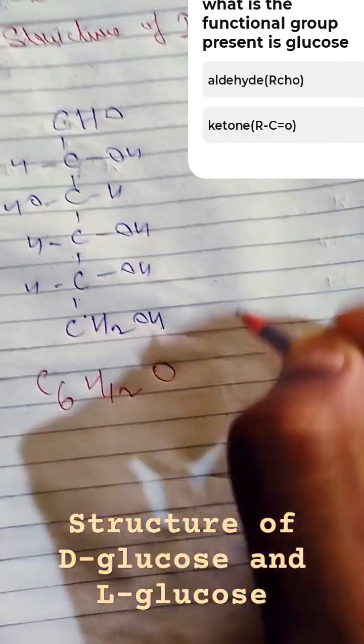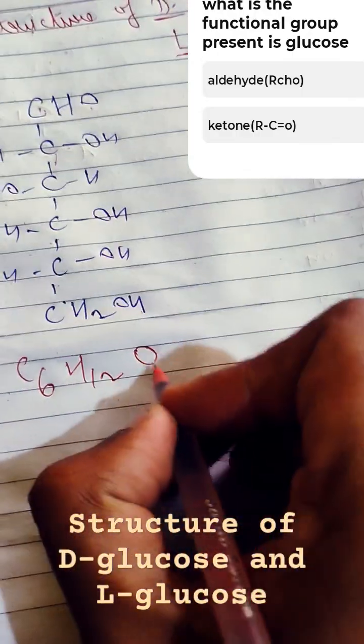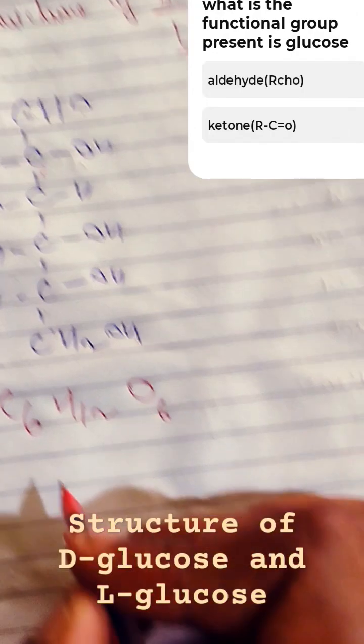Oxygen: 1, 2, 3, 4, 5, 6. So this is D-glucose.